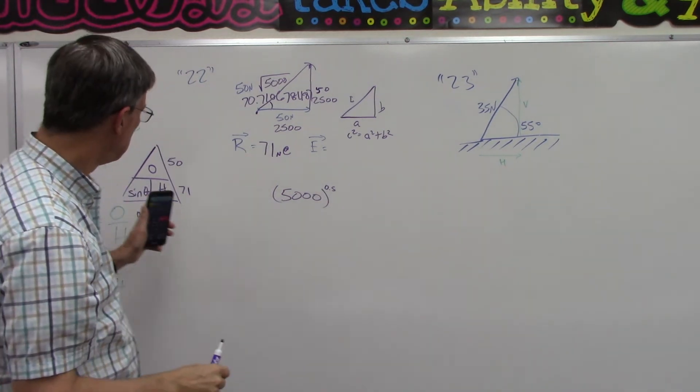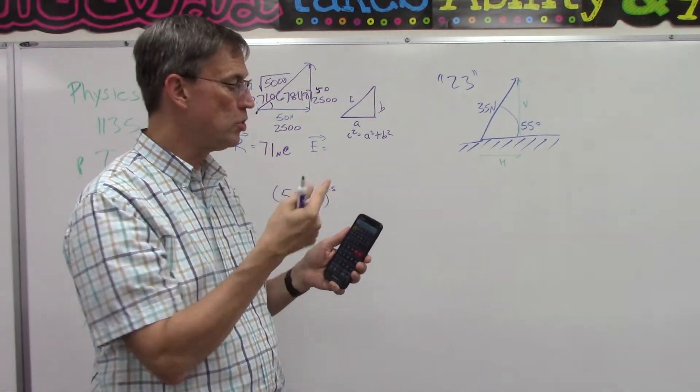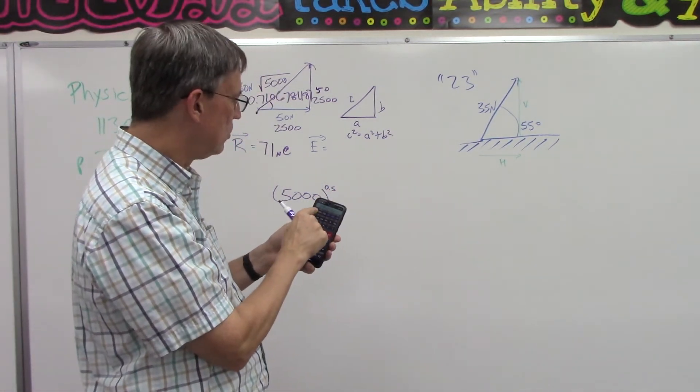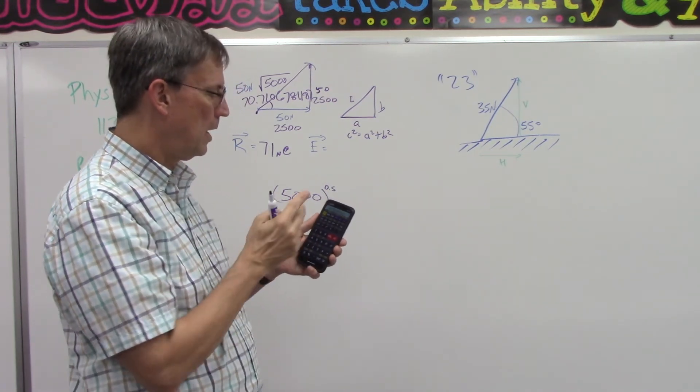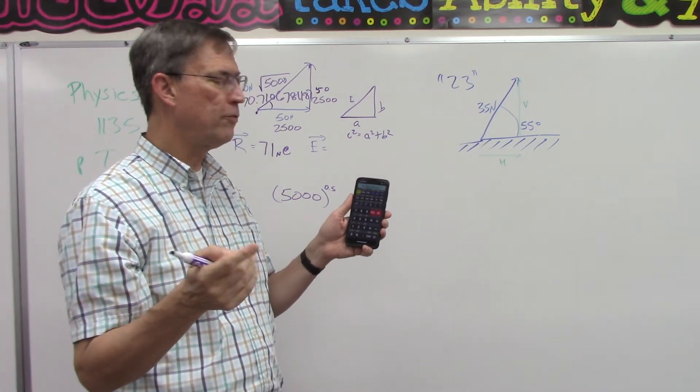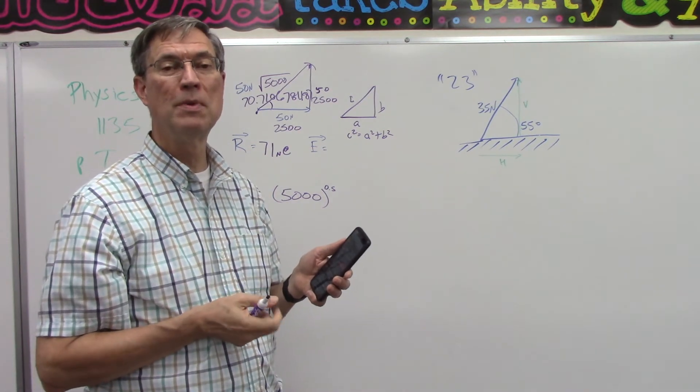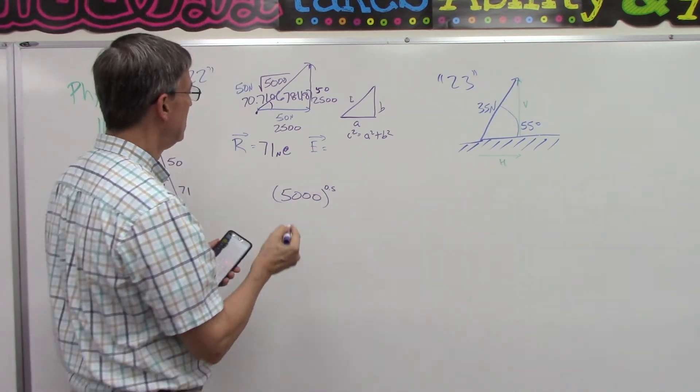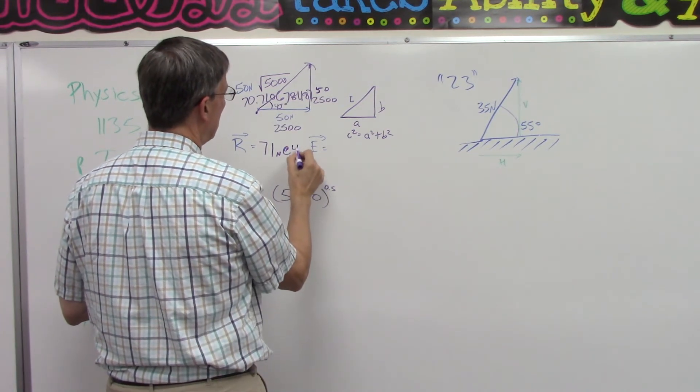And now we're going to, because we're doing the sine, we're going to do the inverse sine, or second function, or shift. So I'm going to do shift sine of that number, and voila! I get 44.766995321, which rounding it to just two digits would be 45 degrees, 45 degrees. All right.